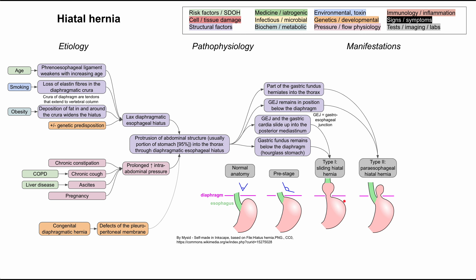What causes symptoms in type 1 sliding hiatal hernia? First, you have a loss of barrier reflex. Normally, gastric reflux is largely prevented by the angle of the esophagus to the stomach, the lower esophageal sphincter, and everything being below the diaphragm. In type 1 sliding hiatal hernia, you lose all that — your gastroesophageal junction is now above the diaphragm, predisposing you to gastroesophageal reflux. In addition, you're also compromising fluid emptying of the distal esophagus, since the hiatus is pinching the stomach and preventing proper emptying.